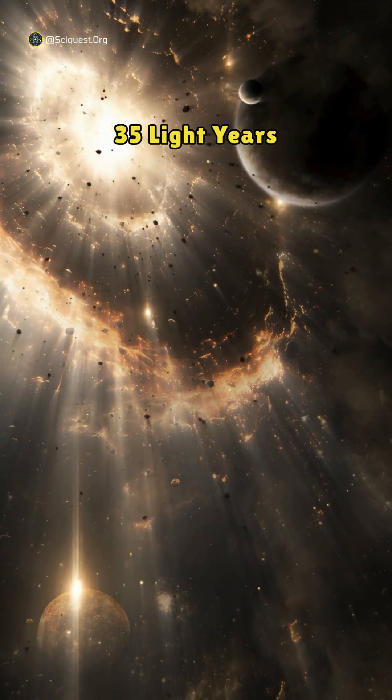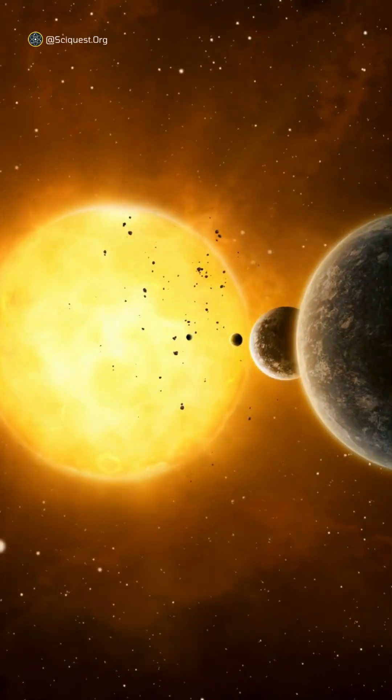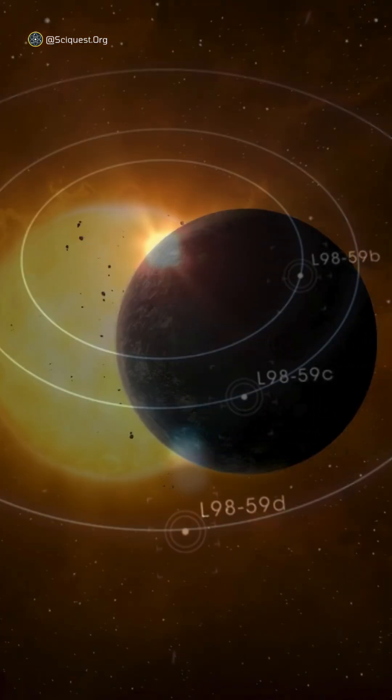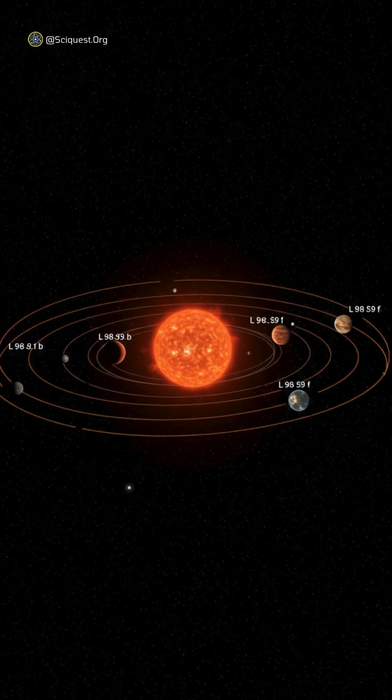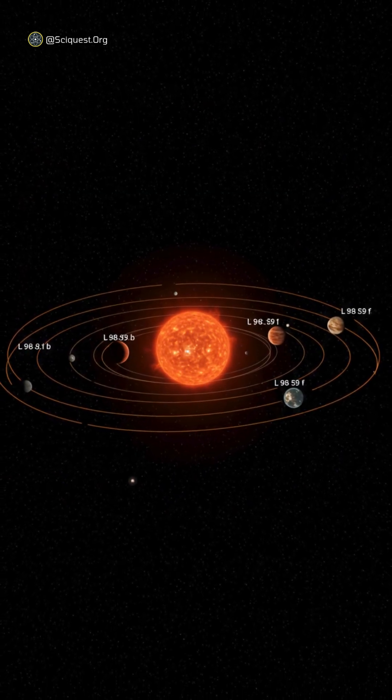Did you know that just 35 light years away, scientists have discovered a potentially habitable world? This system, L98-59, boasts five rocky planets orbiting a cool red dwarf star.